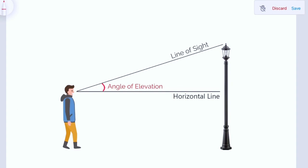Similarly, if the person wants to see the base of the pole, he has to look down from this reference line. So let me draw the line of sight. While he is looking down, the angle between the line of sight and the horizontal line is the angle of depression.